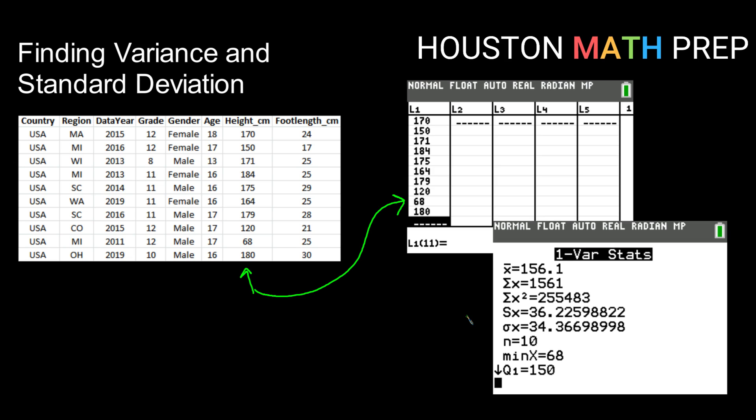We're going to find some different parts of the readout. So when I scroll through or when I look at my items on my one variable stat, I actually notice two standard deviations.